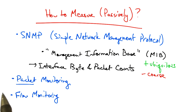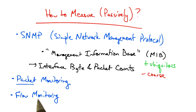Two other ways to measure passively are by monitoring at a packet level granularity, whereby monitors can see full packet contents, or at least headers, or at a flow level, where a monitor may see specific statistics about individual flows in the network. Let's now talk a little bit about packet and flow monitoring.